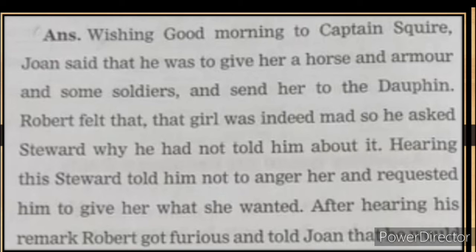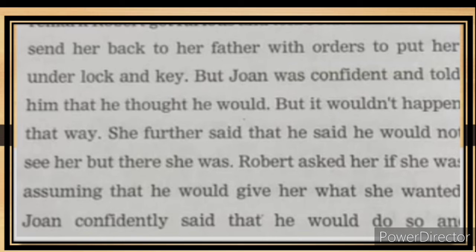Robert felt that the girl was indeed mad, so he asked Steward why he had not told him about it. Hearing this, Steward told him not to anger her and requested him to give her what she wanted. After hearing his remark, Robert got furious and told Joan that he would send her back to her father with orders to put her under lock and key. But Joan was confident and told him that he thought he would, but it wouldn't happen that way. She further said that he said he would not see her but there she was.